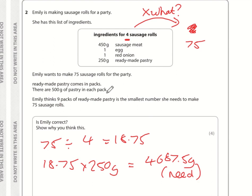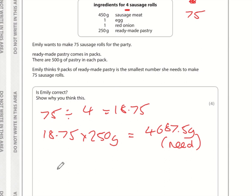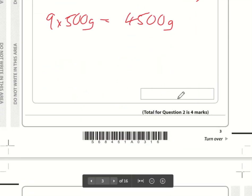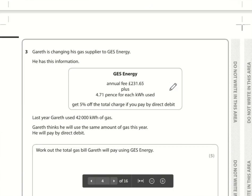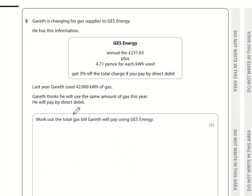Pastry comes in packs of 500g. Emily thinks 9 packs is enough. Nine times 500 grams is 4,500 grams. We can see that 4,500 is less than 4,687.5 grams, so Emily is not correct.